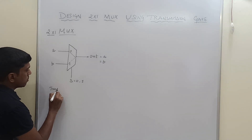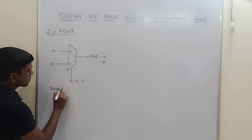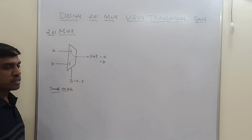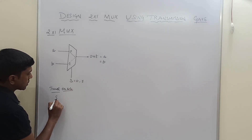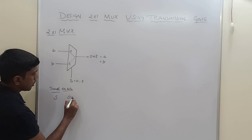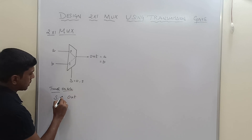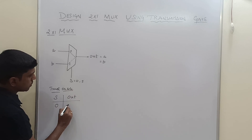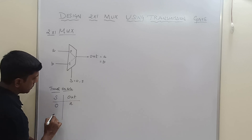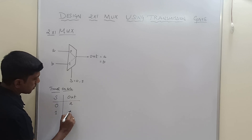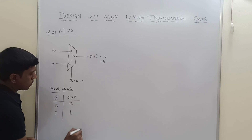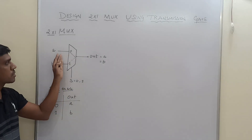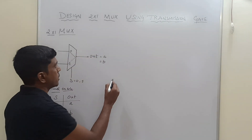Now I will write the truth table. The output is based on the selection line S. If the selection line equals 0, output equals A. If the selection line equals 1, output equals B. Now I am going to convert this multiplexer structure into a transmission gate structure.